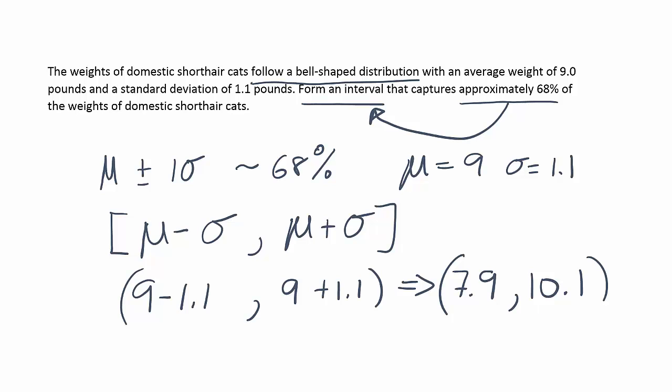You'll notice that I used brackets here and parentheses down here. That really makes no difference, because weights are a continuous variable. The chance that any particular cat weighs exactly 7.9 pounds — that probability is approximately zero. Of course it won't be zero if you're talking about rounding, but for our purposes it makes no difference whether we use the rounded parentheses or the square bracket. So let's just keep it at rounded parentheses when we fill in the numbers.